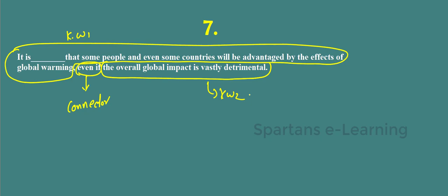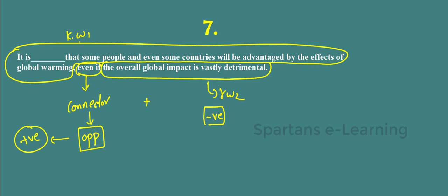Keyword one will depend on keyword two plus the connector. Keyword two says the overall global impact is vastly detrimental — a very negative term. The connector 'even if' is an opposite connector. So negative plus opposite gives you a positive word. Keyword one must therefore give a positive term — some people will be advantaged — they are getting benefited, a positive thing.